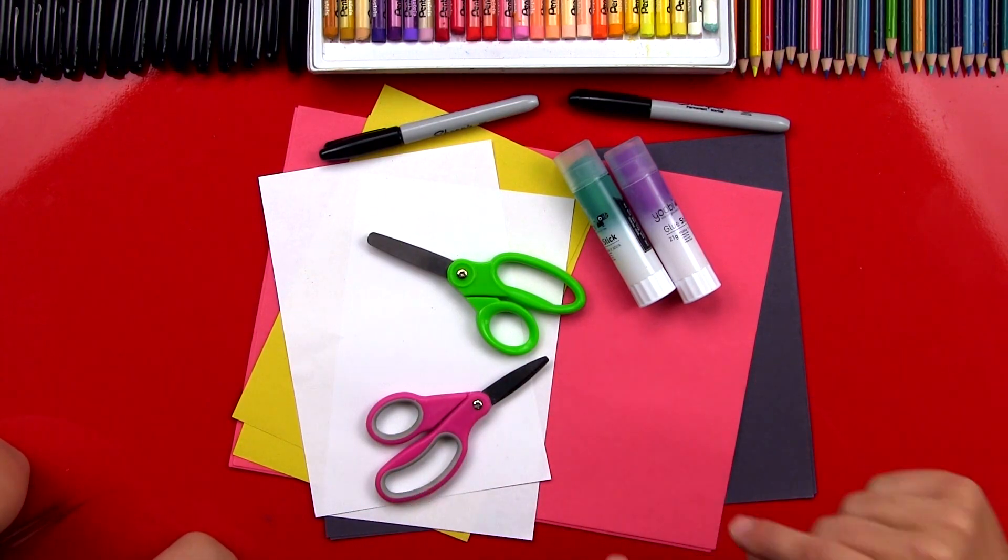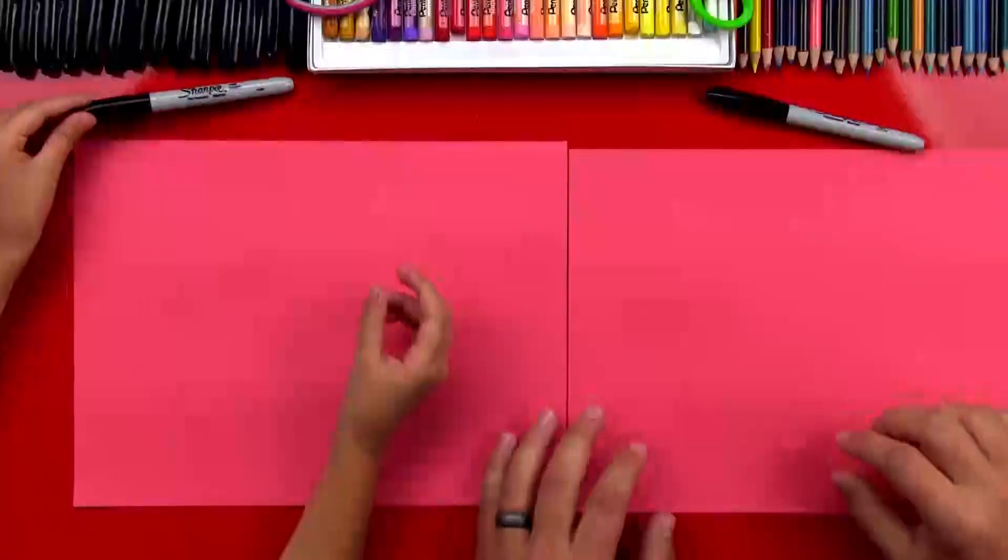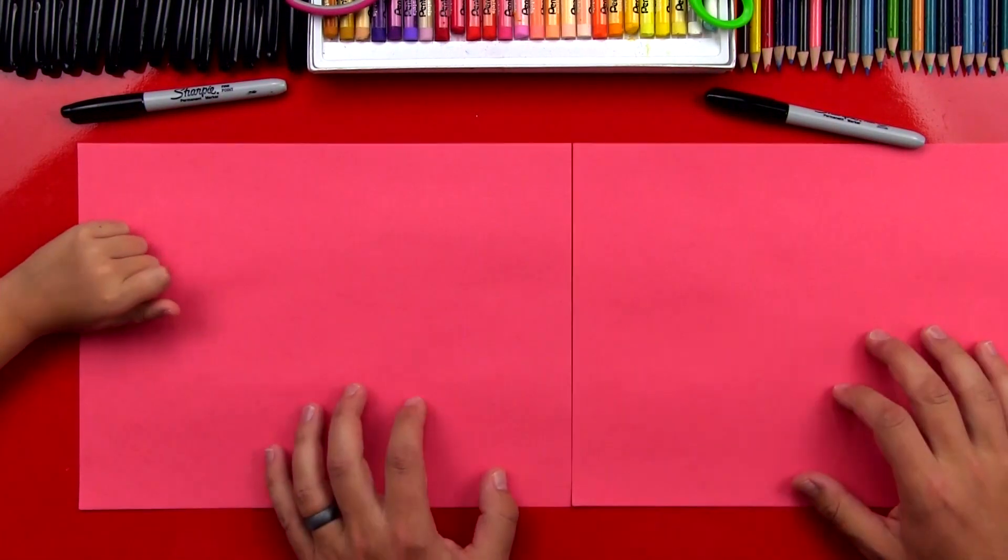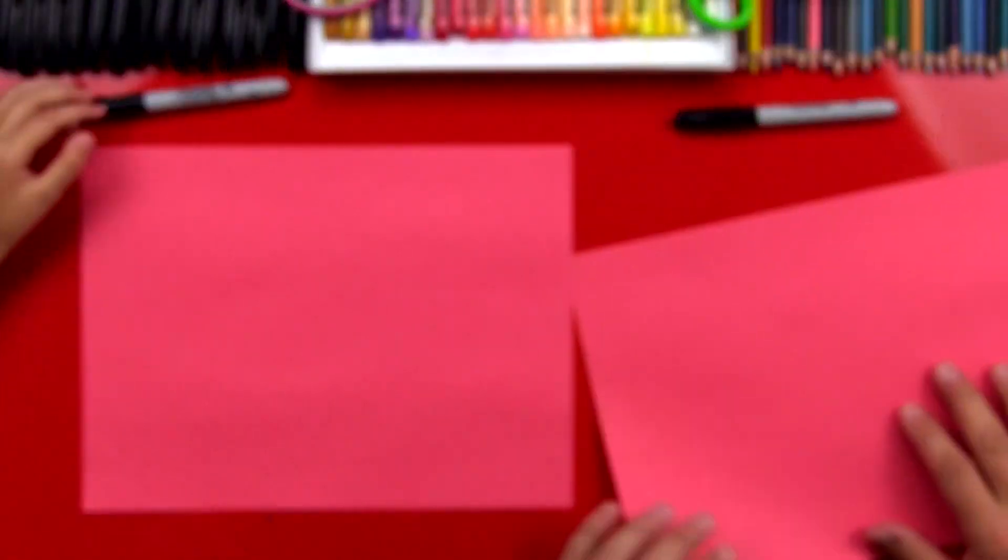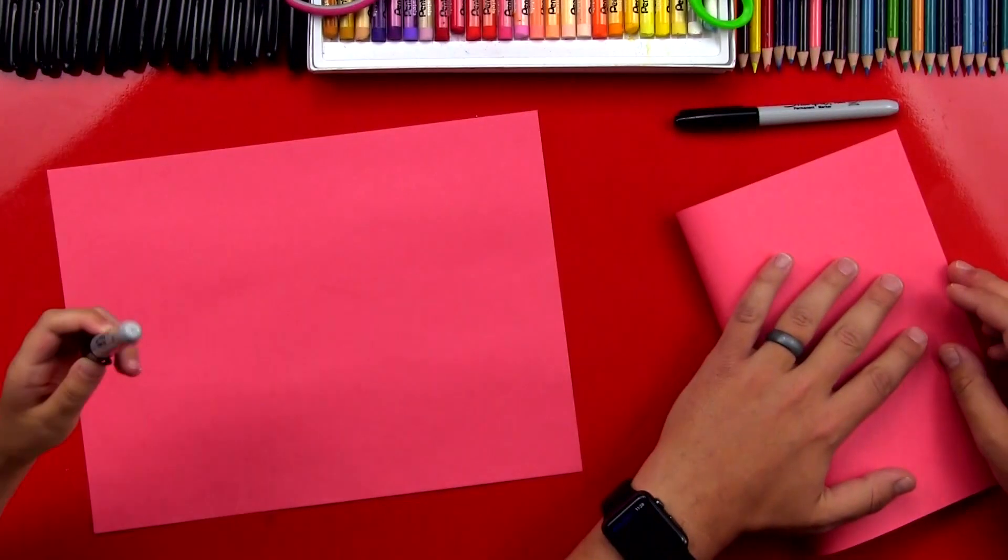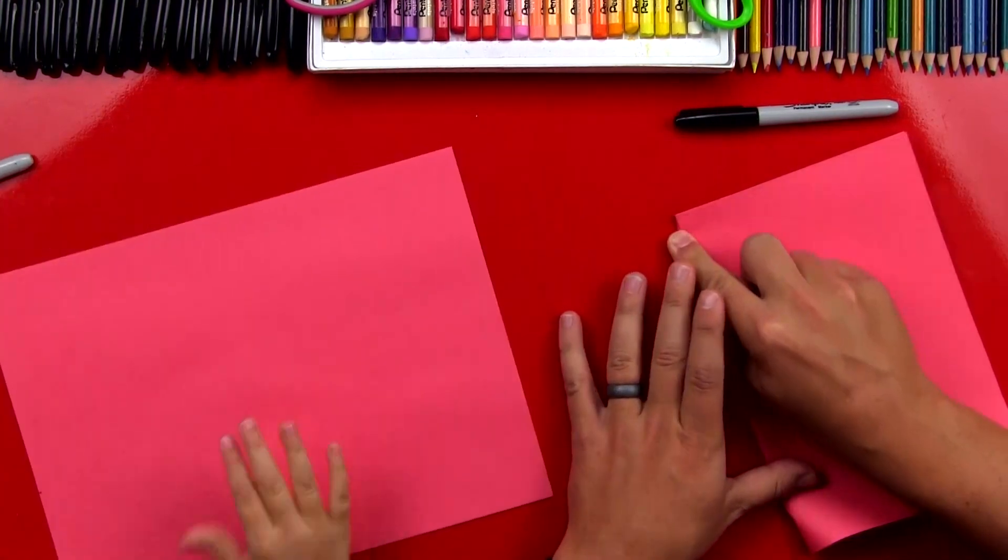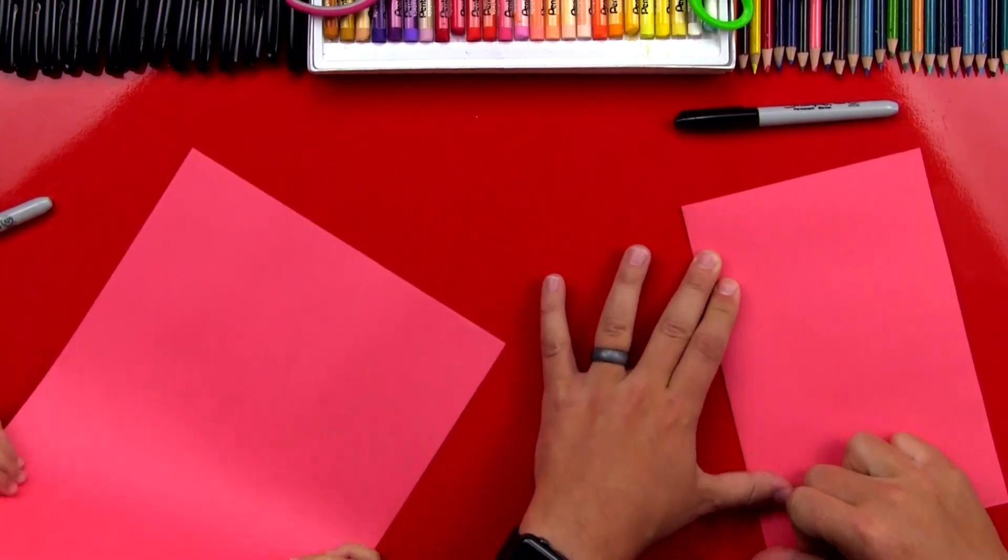Let's move everything off to the side, except for the red. Alright, we got our red sheet of paper and we're going to use this to make the french fry box. And we got our markers.